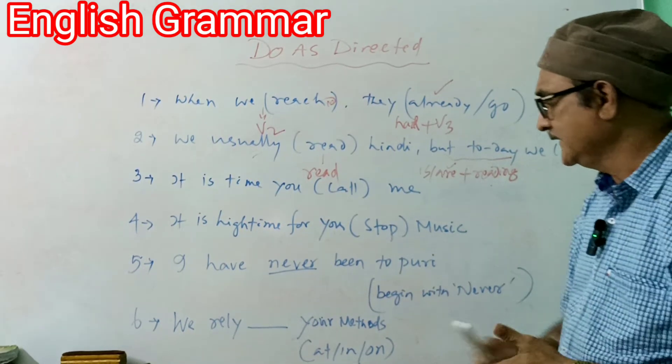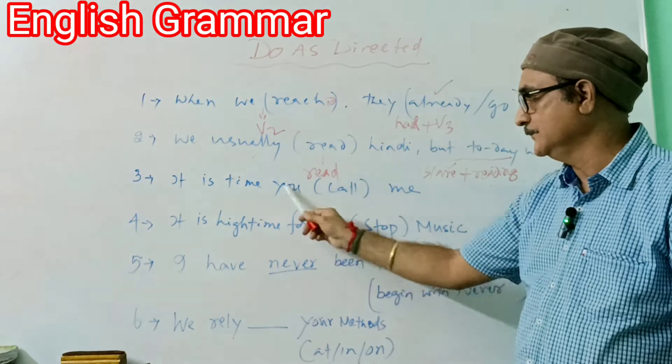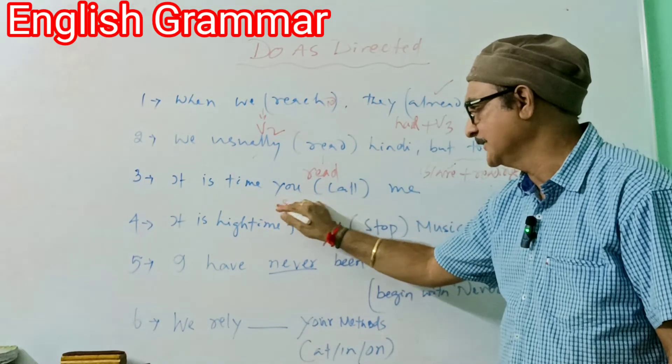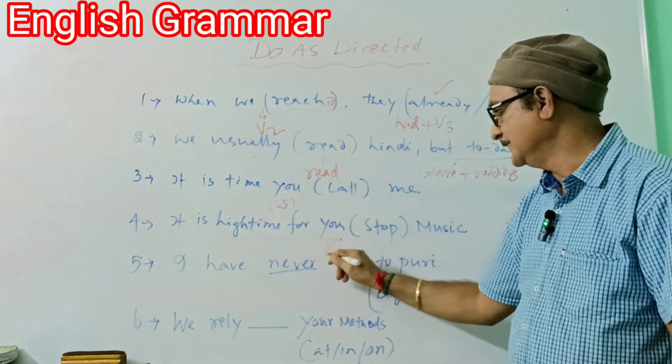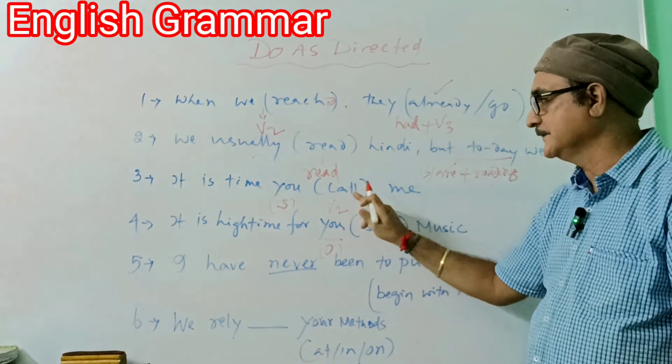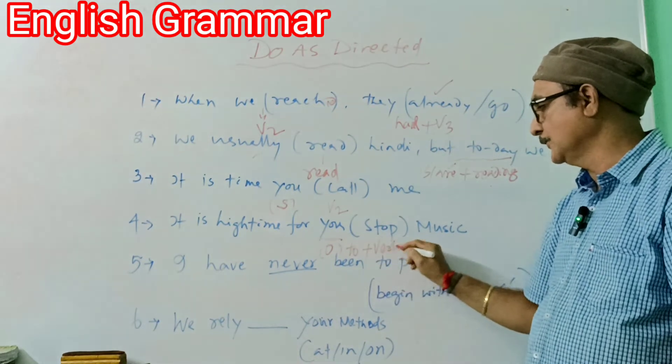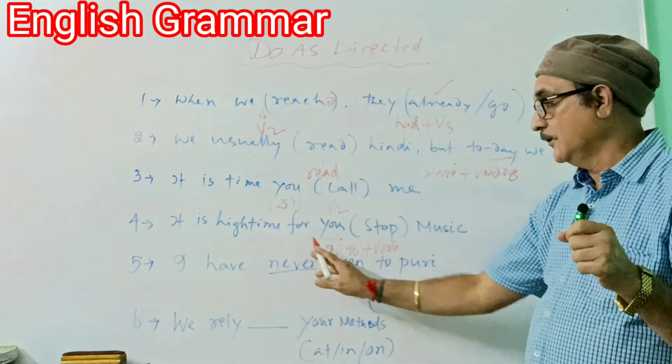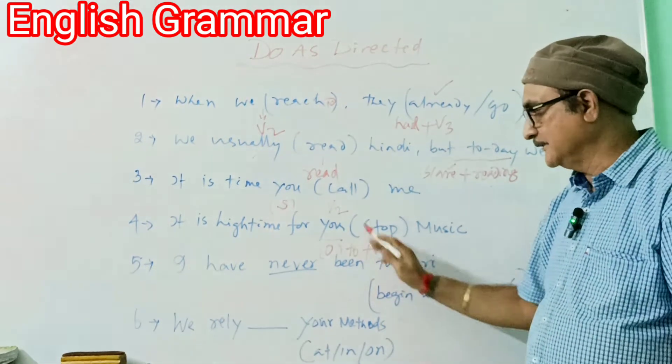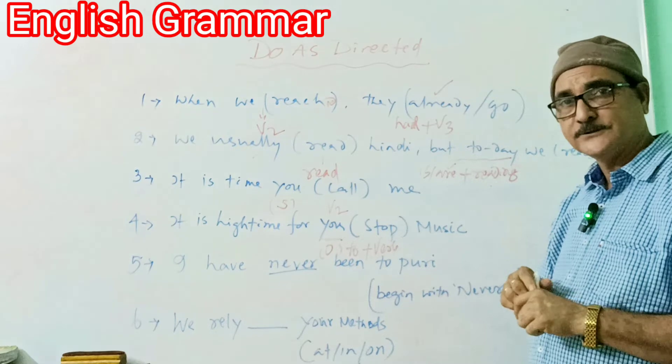Now consider question number three. This is 'it is high time,' or 'it is time.' You will be able to use 'it is time' or 'high time.' The difference: if there is a subject, you use V2, meaning past tense. If there is a preposition with an object, then you use 'to' plus verb infinitive. So 'to stop.' Object: 'for' plus 'to' plus infinitive. Subject: simple past. This is an important question for alternative English and ICSE students. Practice this.